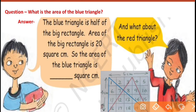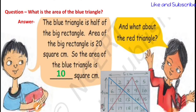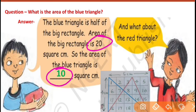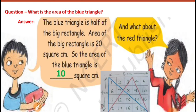The area of the big rectangle is 20 square centimeters — you can count, there are 20 squares of one centimeter side. So the area of the blue triangle is half of 20, which is 10 square centimeters. We have found the area of the blue triangle. Write this question properly in your notebook and draw the shape also.